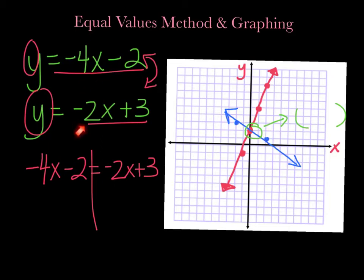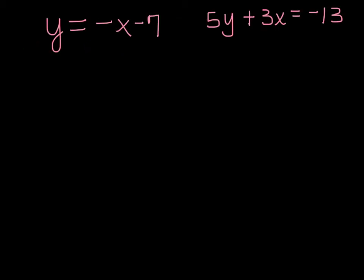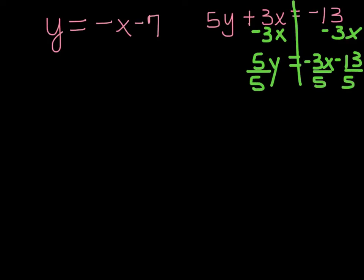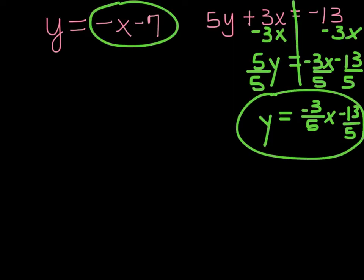So we either used graphing or the equal values method. Today we're going to use a new method called substitution. You're going to use substitution when you see equations like this — one says y equals something, and the other says 5y plus 3x equals negative 13. If we tried equal values, we'd subtract 3x from both sides to get 5y equals negative 3x minus 13, then divide by 5 — and that gives us fractions. So there's another method that is much easier and won't involve fractions.